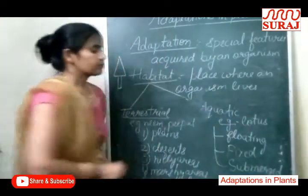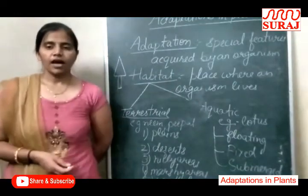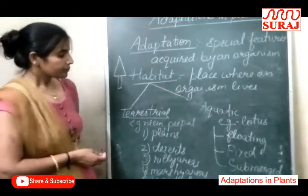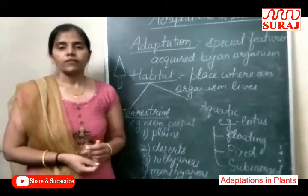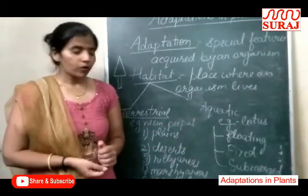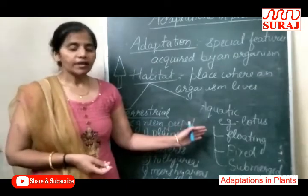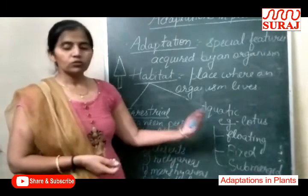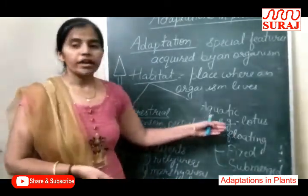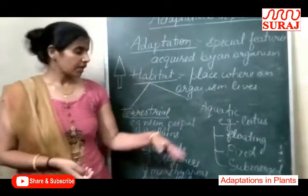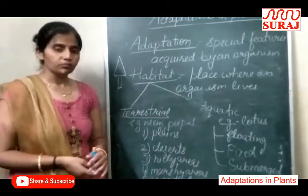First, Floating plants. Examples of floating plants are Water Hyacinth. These plants float on the surface of the water body. Their roots are not so well developed — unki roots well developed nahi hoti hain. Jo leaves hoti hain, vo photosynthesis process karti hain taaki plant ko food mil sake.